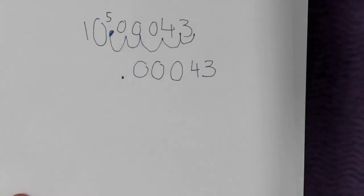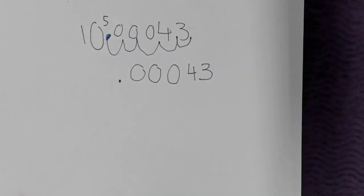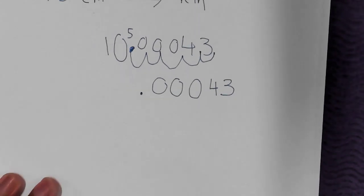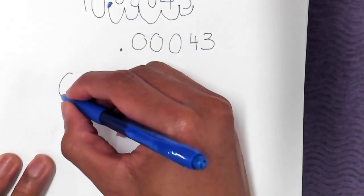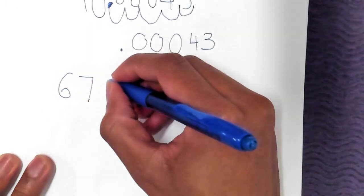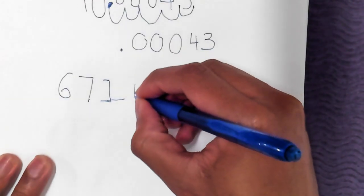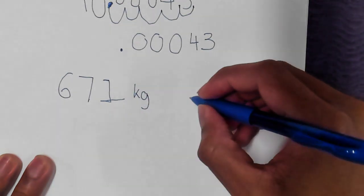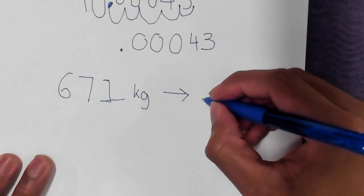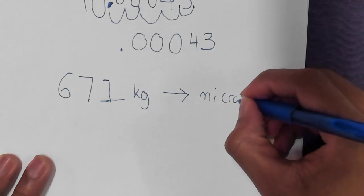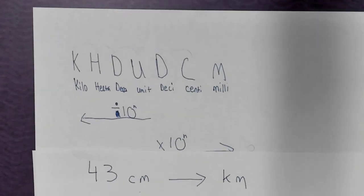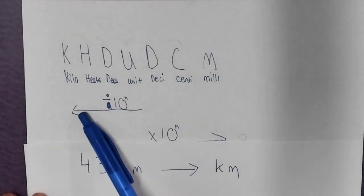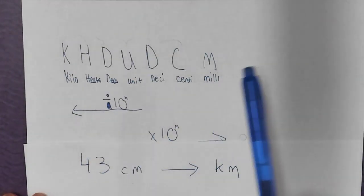Awesome. Let's do one other problem now. We want to convert 671 kilograms into micrograms. You can see there is kilo on our chart, but there's no micro in our acronym.